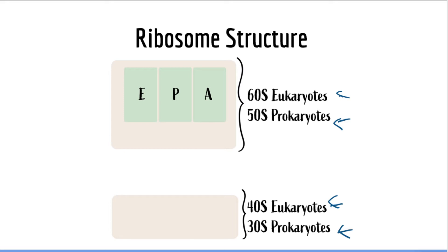Both kinds of ribosomes have three docking points for tRNA binding. They are labeled the E site, the P site, and the A site. The A site stands for the acceptor site — it is where charged tRNAs bind to bring in the next amino acid. The P site stands for the peptidyl site, where the new amino acid is bound to the growing protein chain and peptide bonds are created. The E site stands for the exit site, where the empty tRNA leaves the ribosome after its amino acid has been incorporated into the new protein chain.